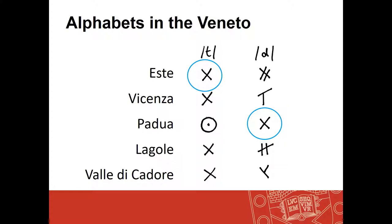Both dialects have both of these phonemes, but the sign has been used for different ones. What you get in Padua instead for the T phoneme is a Theta, which is actually a dead letter at Este — it's used in the abecedaria but doesn't occur in any inscriptions at all. So if you saw that letter, you would know immediately that this is not an inscription using the normal alphabet of Este.